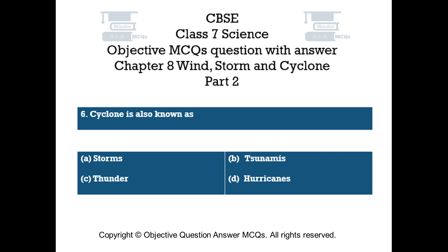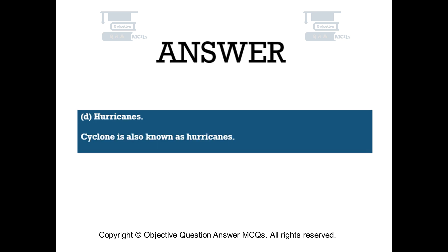Question number 6. Cyclone is also known as — Option A: storms. Option B: tsunamis. Option C: thunder. Option D: hurricanes. The right answer is Option D: hurricanes. Cyclone is also known as hurricanes.